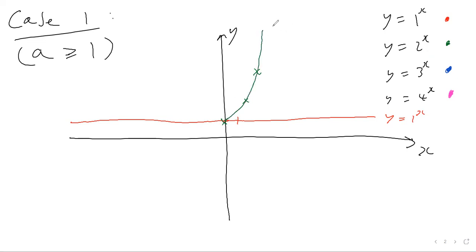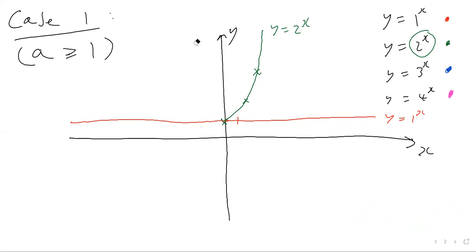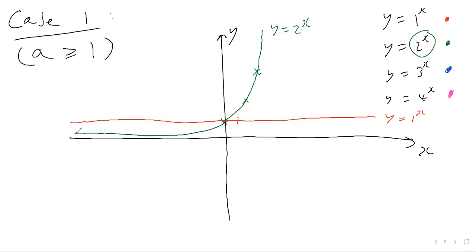What happens when you plug in negative numbers? For example, x equals negative one: two to the power of negative one is one over two, because two to the minus one equals one over two. So on the negative side, the graph continues like this, getting closer and closer to zero but never quite touching zero on the y-axis.